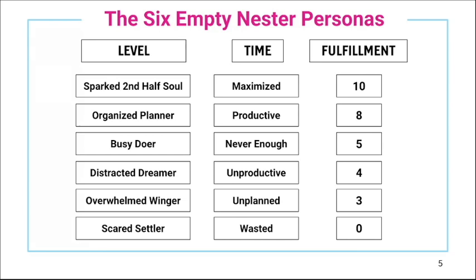The Organized Planner is super productive with a strong sense of fulfillment because she's so organized — checking off her checklist and feeling very productive. But the problem is she's planning the wrong things: things that don't satisfy her sense of purpose. She might help other people, and a lot of organized planners are nurturers, but at the end of the day their cup is empty because they poured it all out on others. And then there's the Sparked Second Half Soul — somebody who does exactly what she loves to do, makes an impact in the world, and has fulfillment at the top of the charts.